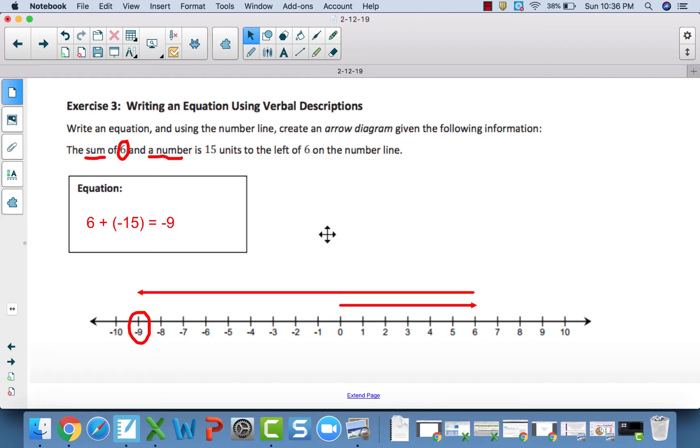For exercise 3, you should have gotten a sum of negative 9. So, to break this down, it says the sum of 6. So, that tells me 6 is my first number and a number. So, that other number I don't know yet but it is 15 units to the left of 6. A number that is 15 units to the left of 6 must be a negative 15. If it was 15 units to the right, it'd be a positive 15. But, because it's to the left, it is a negative 15. So, I have 6 plus negative 15 and once I drew that, I ended up at negative 9. So, the sum of these two numbers has to be negative 9.